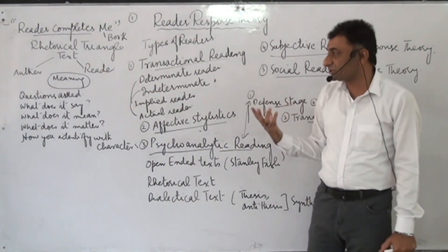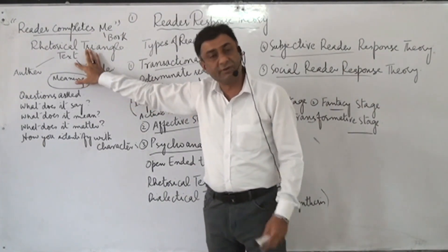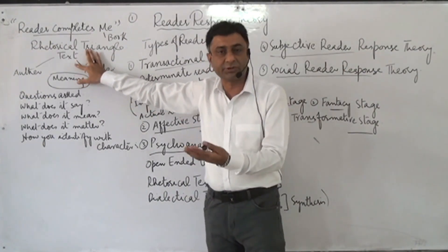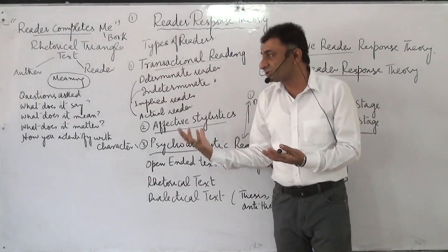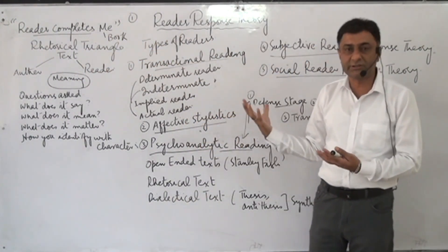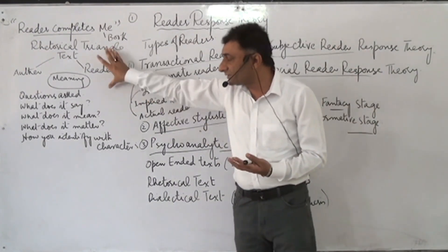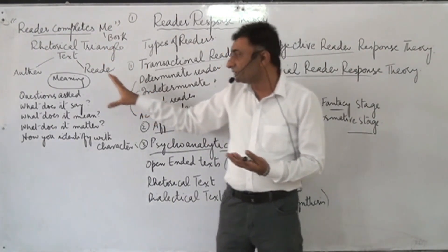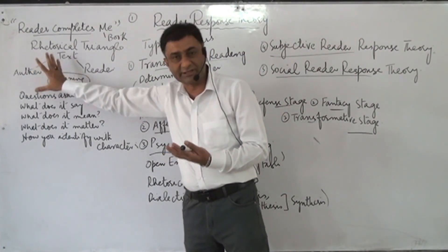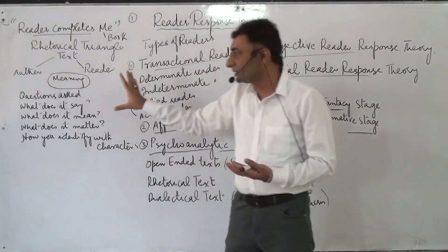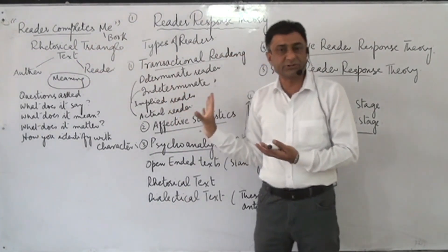The second position is that the text is the source of meaning. This brings us back to neocriticism and Russian formalism — it means text is the source of meaning, form is the source of meaning, and the words on the page are the source of meaning. Reader response theory rejects this position as well.